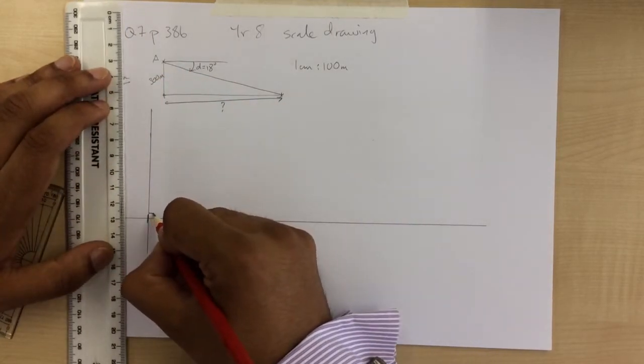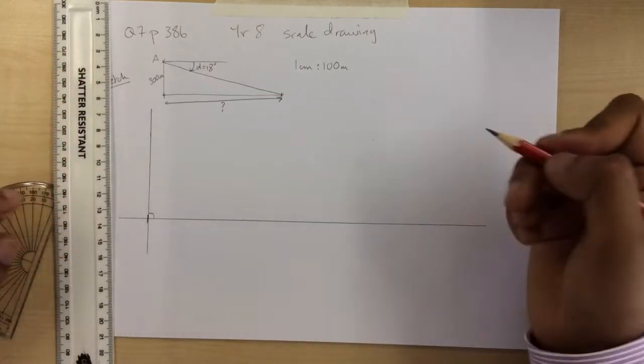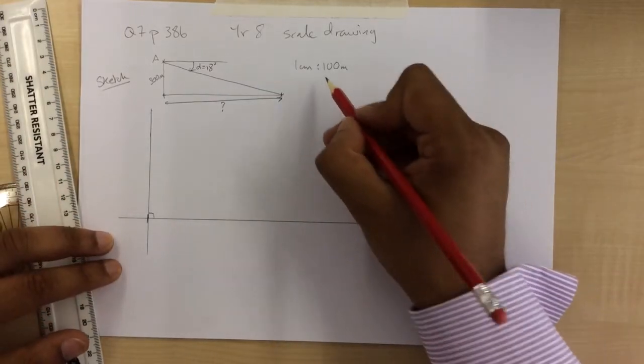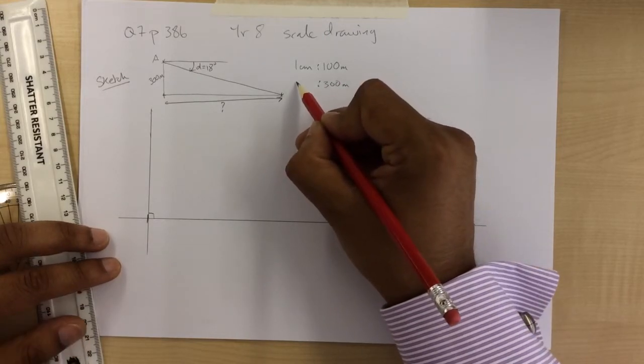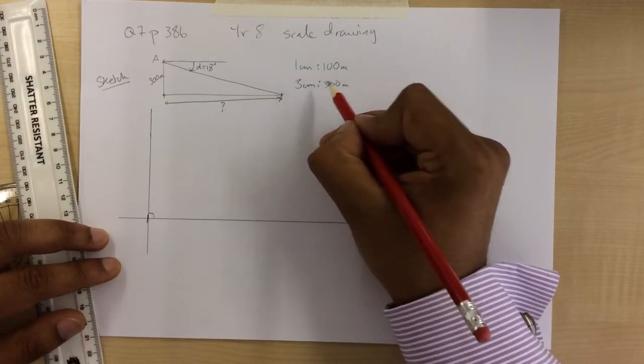Use my ruler, and I'm going to have a nice right angle there. Mark my right angle with a little, and I've measured that. So 300 metres is how many centimetres? I think that's 3 centimetres. That's the correct ratio.